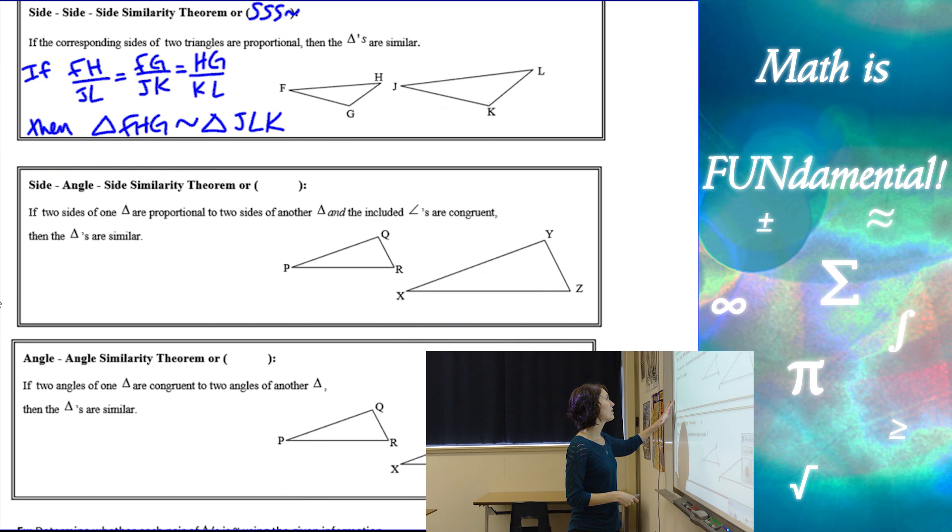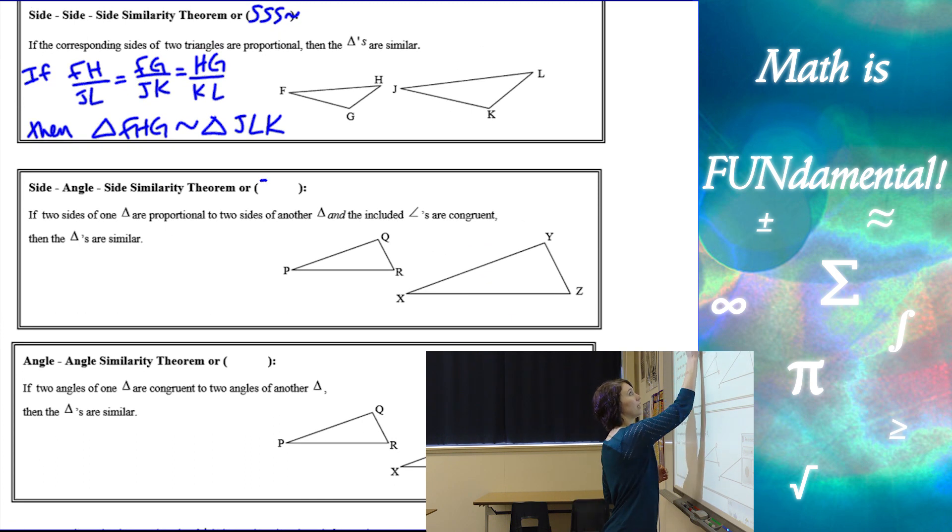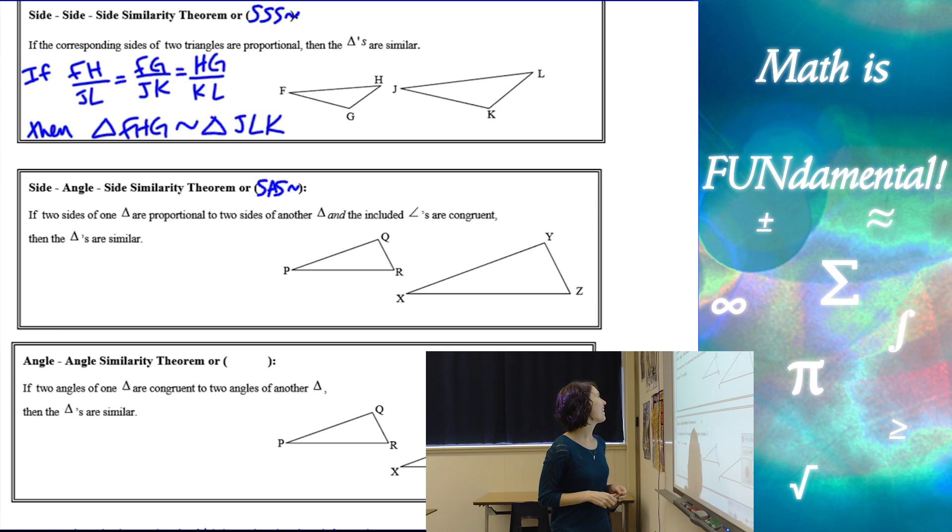The next one, we have side-angle-side similarity or SAS with the squiggle. That says if two sides of one triangle are proportional to two sides of another and the included angle is congruent for both triangles, then we have similar triangles.